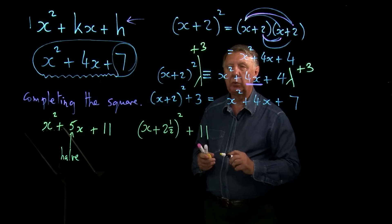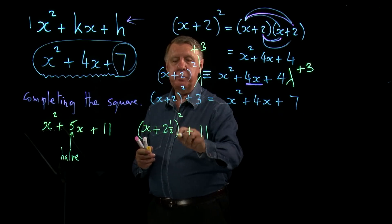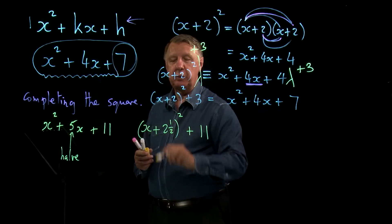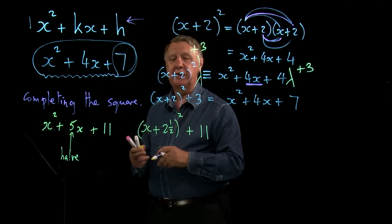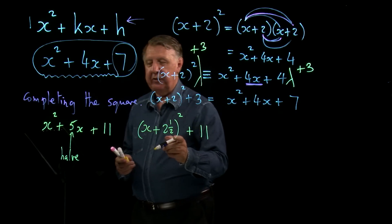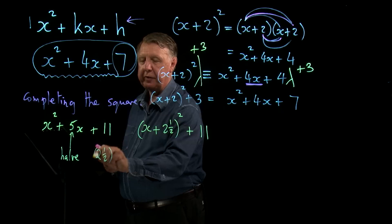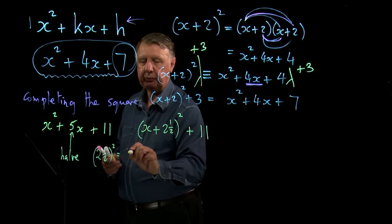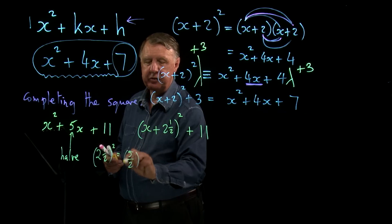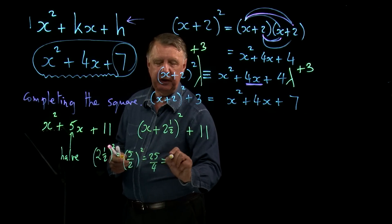Now, the 11 is still there at the moment, but it's not going to end up as 11. So, I need to know what happens. Well, if I square this bracket out, I get 2 and a half squared. Now, I know what you're all thinking, oh dear, I haven't got a calculator. 2 and a half squared, extra bit of burden. But it's not a problem, is it? Because 2 and a half is 5 over 2. So, 5 over 2 squared is 25 over 4, which is 6 and a quarter.